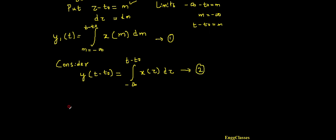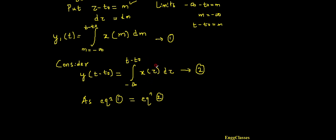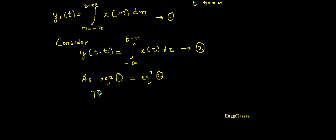For the system to be time invariant, equation 1 must equal equation 2. Since equation 1 equals equation 2 — note that τ and m are dummy variables, so we can replace m with τ and get back the same equation — both equations are the same. Therefore the given system is time invariant.